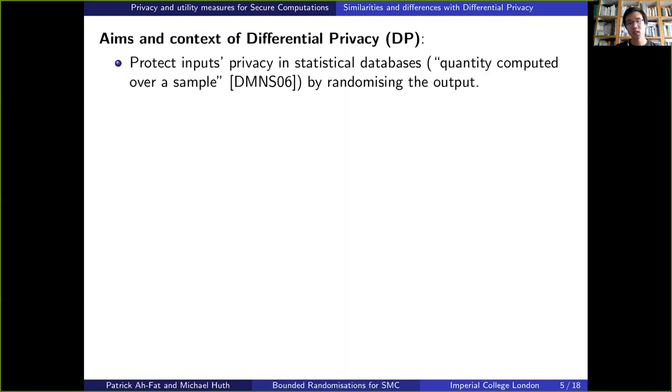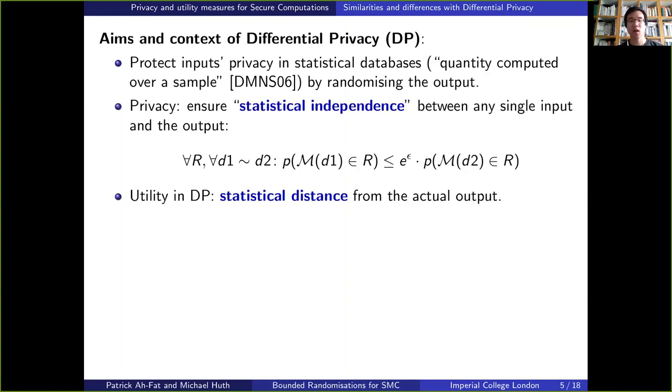To understand that, it's important to recall that the statistical database is a particular type of database that only allows a certain type of queries such as sum, count, or averages. In this setting, the aim of differential privacy is to ensure statistical independence between any single input and the output.